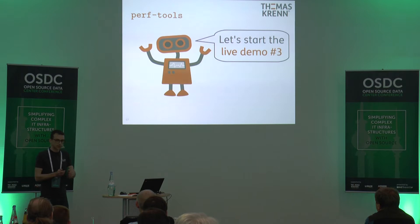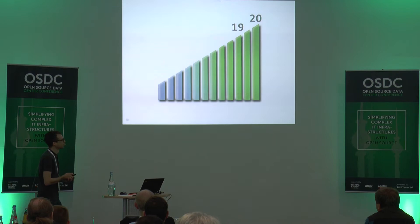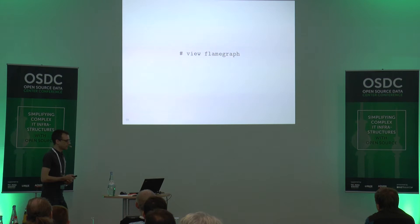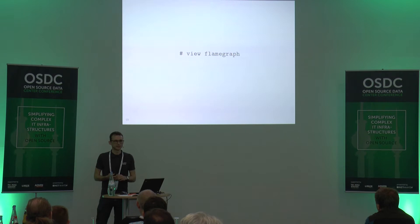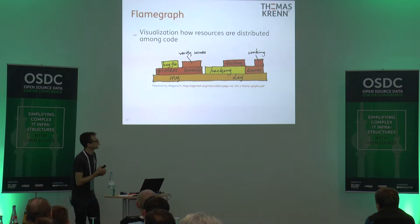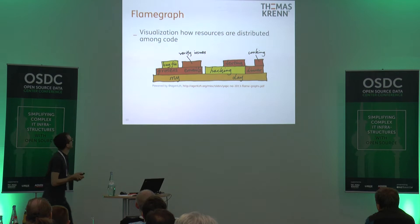That's been demo number three, 12 minutes left. It's not that easy to read 22,000 functions of a date call. A good idea is to use a more readable output — flame graphs are a visualization of how resources are being distributed among code.